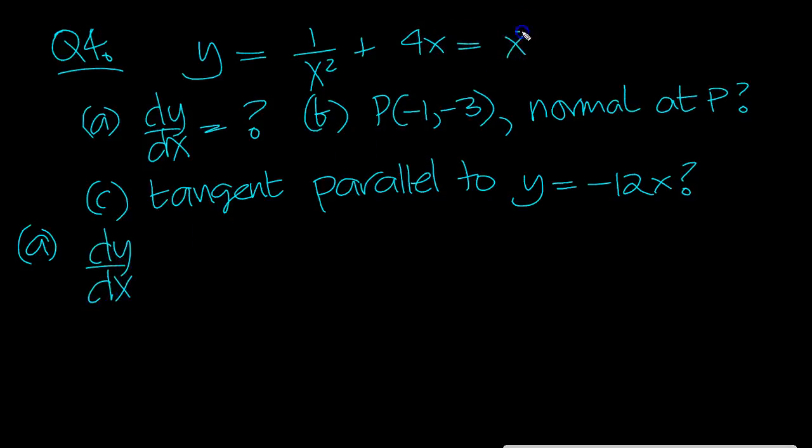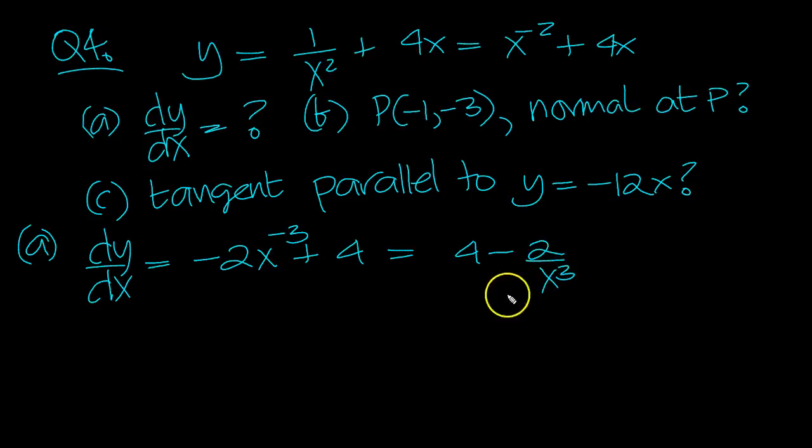This is equal to x^(-2) plus 4x. So differentiating: minus 2x^(-3) plus 4, which is 4 minus 2 over x cubed.